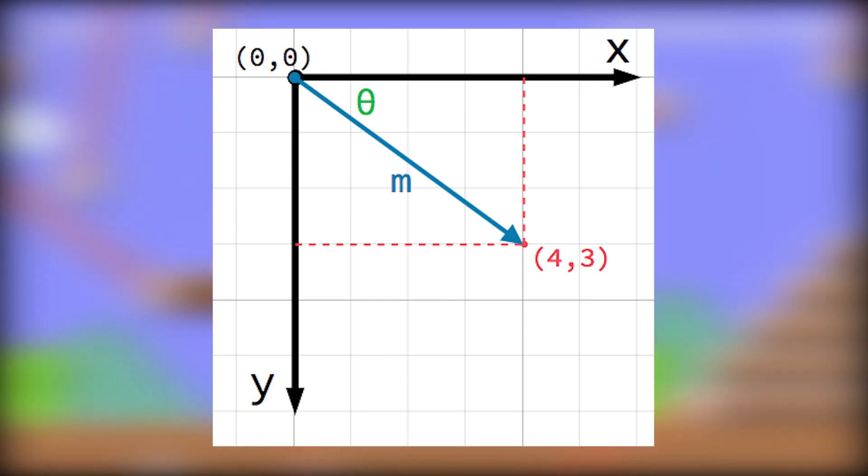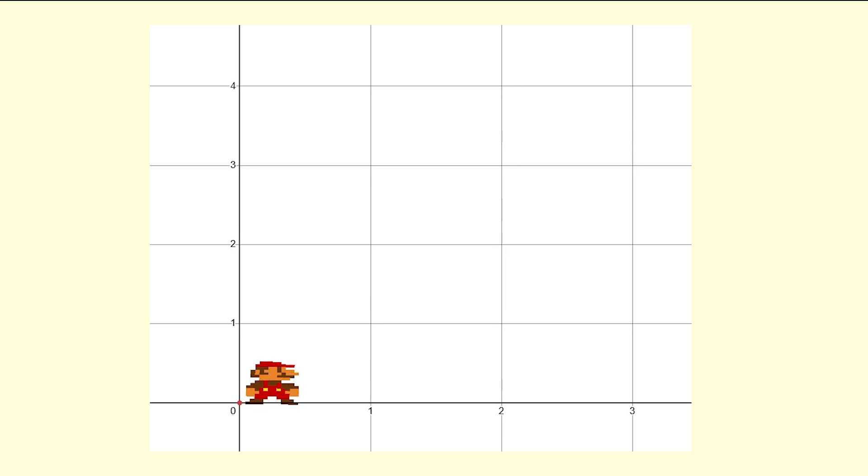I like to think of it as a set of instructions on how to move a point. So for example, if you had a player and their position was stored as a vector, they start at point zero zero and you want them to move three points to the right and four points up. This would be the vector you would apply to get the player to move to that point.